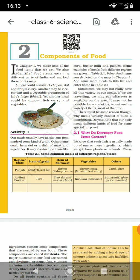We have rice, we have dal, we have vegetables. Some eat meat, eggs, milk. They all are items included in our food. We also take curd, buttermilk, pickles. These are the food items we have already studied in chapter number 1. But why do we need to have all sorts of varieties in our meals?